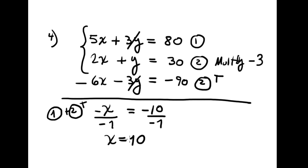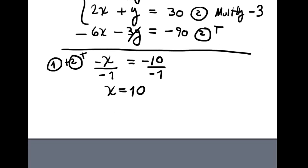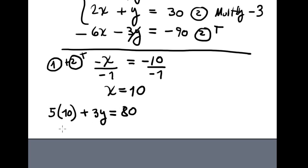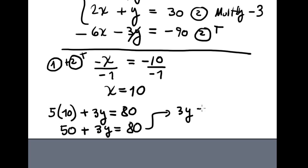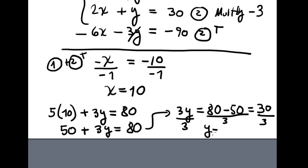To find y, substitute x equals 10 into equation 1: 5 times 10 plus 3y equals 80, so 50 plus 3y equals 80, meaning 3y equals 30. Dividing both sides by 3, y equals 10.